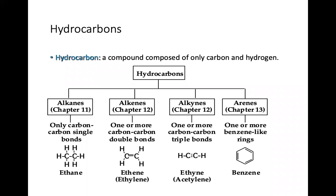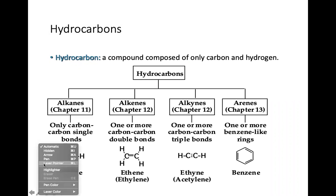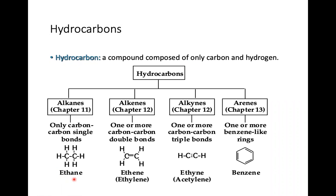There are several kinds of hydrocarbons: alkanes, alkenes, alkynes, and arenes. Alkanes have only carbon single bonds — this is ethane, it has two carbons and six hydrogens. Alkenes have one or more carbon-carbon double bonds. The IUPAC name is ethene — it has two carbons, and you'll notice the hydrogen count decreases from six to four because of the double bond.